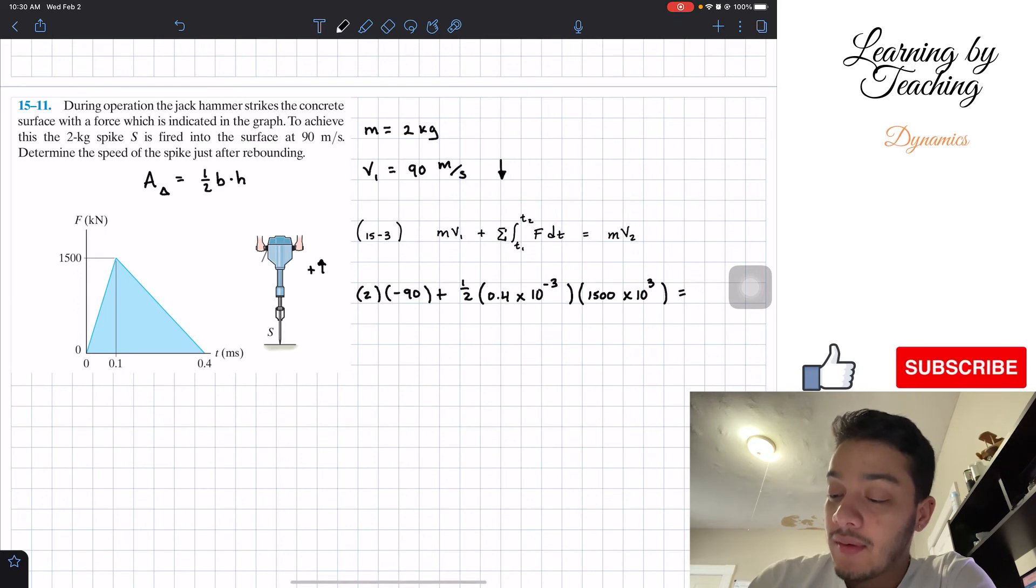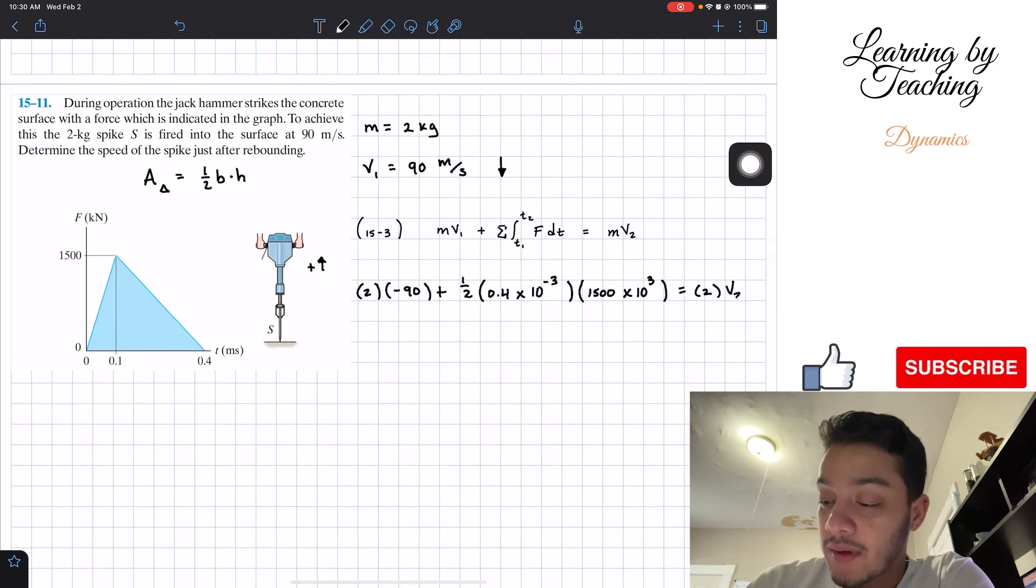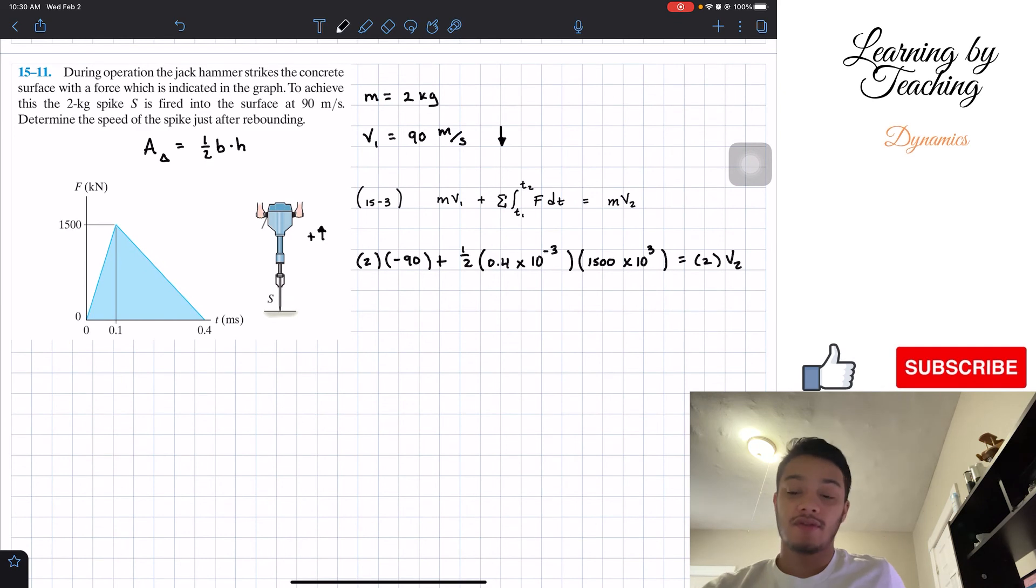Therefore, we have equal to, and then we have the mass, again, 2, times the velocity that we want to find, velocity 2. So let's plug this into our calculator, our left side.